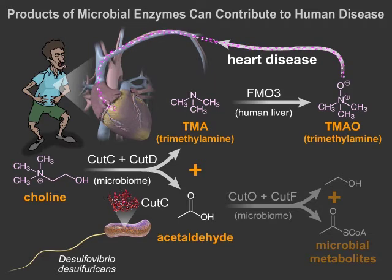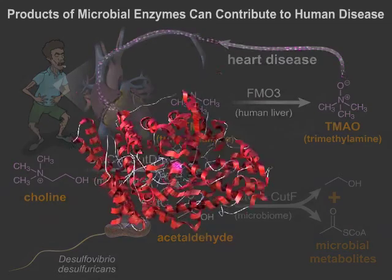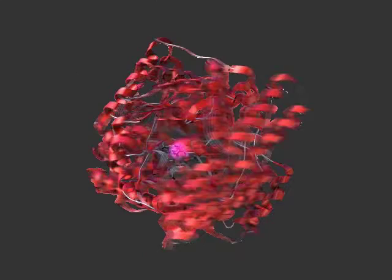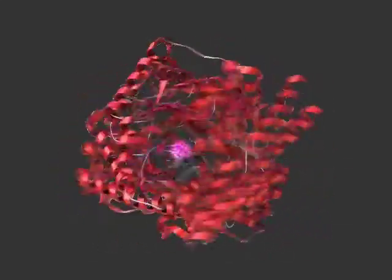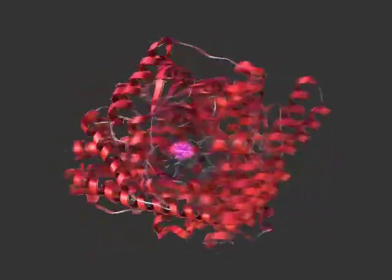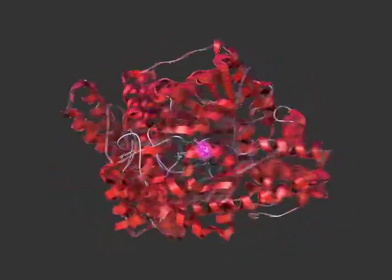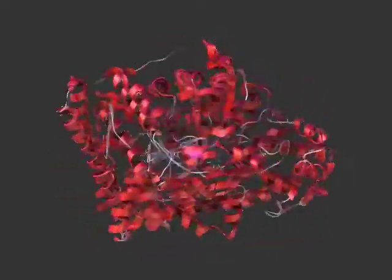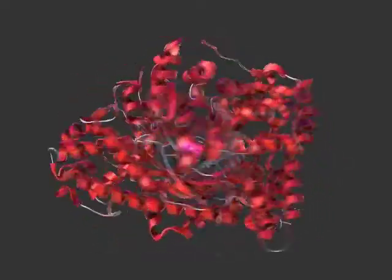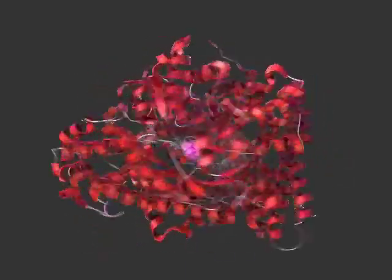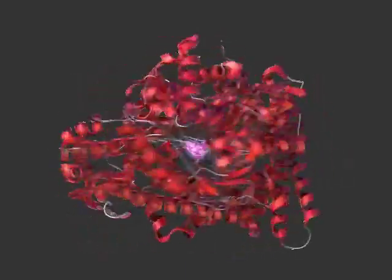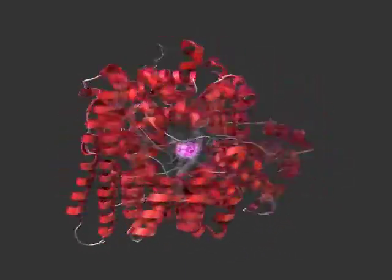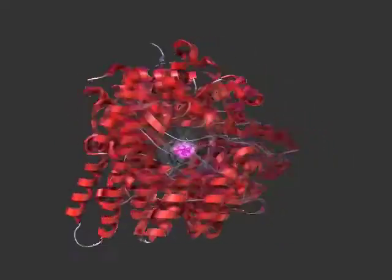But how do we go about finding ways to stop enzymes like CutC from making molecules that hurt us? One way is by generating computational models of these enzymes. This is particularly useful with enzymes that are difficult to study experimentally, like CutC, which can't function in the presence of oxygen. Unfortunately, there are over 10 to the 600 different structures that we could make from the amino acid sequence of CutC, far too many to go through one at a time.